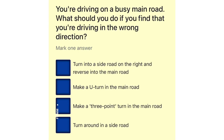You're driving on a busy main road. What should you do if you find that you're driving in the wrong direction? Turn into a side road on the right and reverse into the main road. Make a U-turn in the main road. Make a three-point turn in the main road. Turn around in a side road.